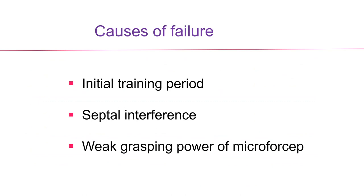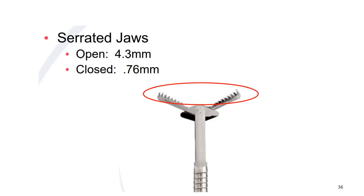There were some cases of failure during EUS TTNB, observed during the initial training period. This is a kind of new technology, so during the initial period, we failed some cases. Septal interference and weak grasping power during microforceps closure are causes of failure. Looking at the close-up view of the Moray forceps, I think the tooth direction can be refined — folded inward — to avoid losing the grasped tissue.